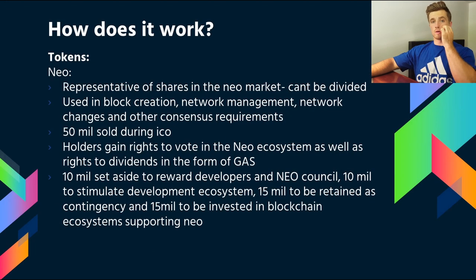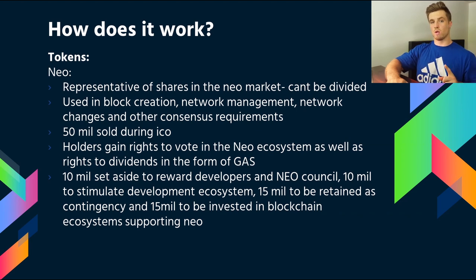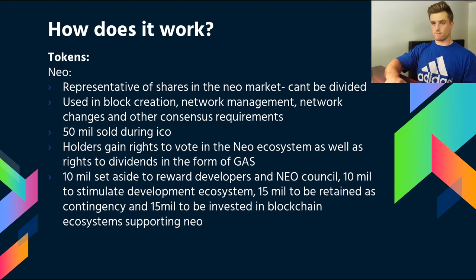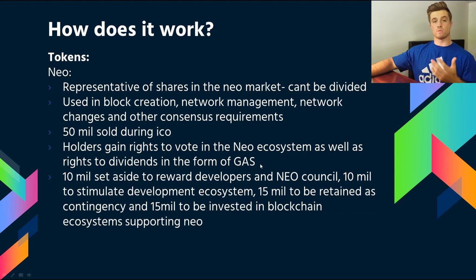There are two tokens on the NEO platform. The first is NEO, which is basically representative of shares in the NEO market and cannot be divided — so if you buy 1.5 NEO and try to send that to your wallet, only one NEO will show up because it only works in whole integers, and you will lose that 0.5 NEO. So it's best to buy whole numbers. NEO is used in block creation, network management, network changes, and other consensus functions. The 50 million sold during the ICO grants holders rights to vote in the NEO ecosystem, and when you hold NEO you can stake it to receive a dividend in the form of GAS.